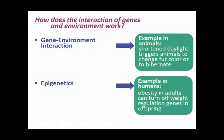Here's an example where obesity in adults can turn off the weight regulation genes in our offspring. When I was a student in the late 80s, we were taught about this guy named Lamarck, who had developed a theory of how traits are passed from parent to offspring — now called Lamarckian breeding. He made the assertion that things that happened to us in our lives could be transmitted to our offspring through our genes and alter how they might come out.